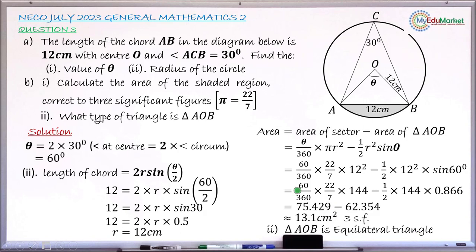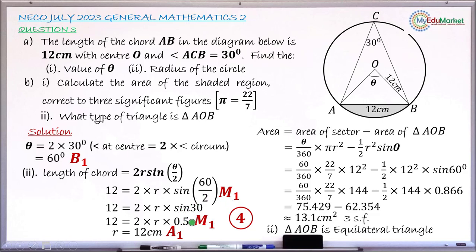Now let me share how this question is marked. For question A Roman numeral 1, getting theta = 60° earns 1 bonus mark. Substituting theta and chord length into the radius formula earns 1 method mark. Simplifying to find R earns another method mark, and correctly getting R = 12 cm earns 1 accuracy mark.